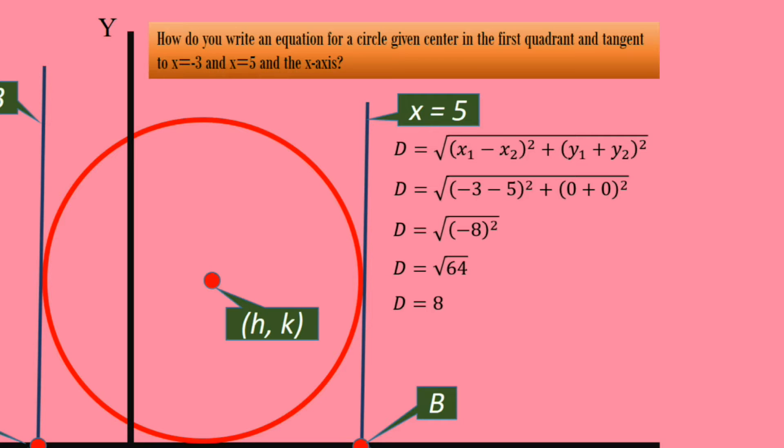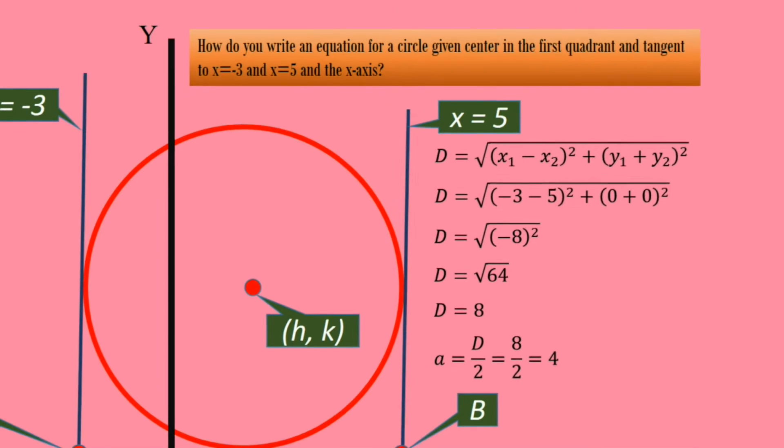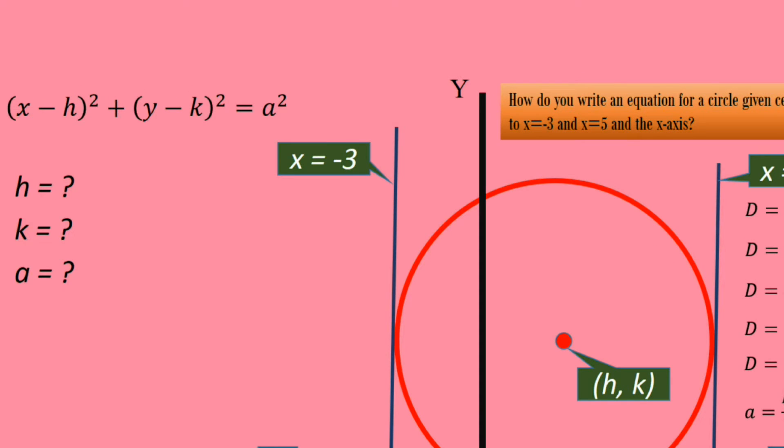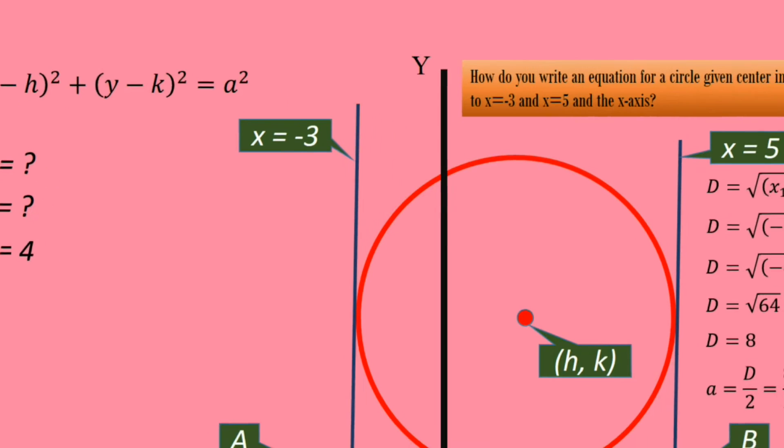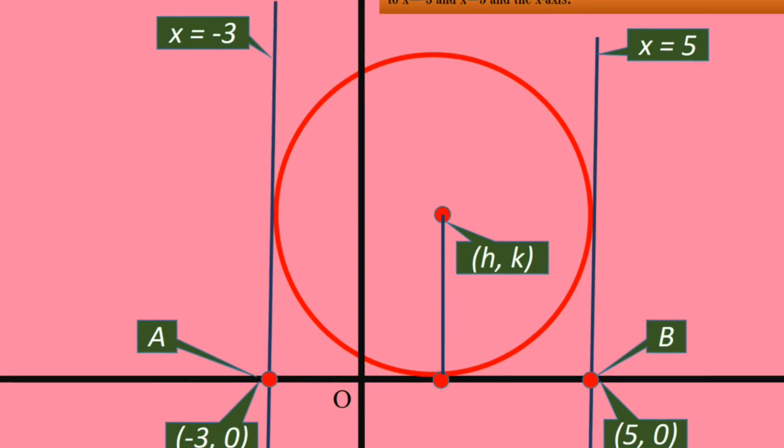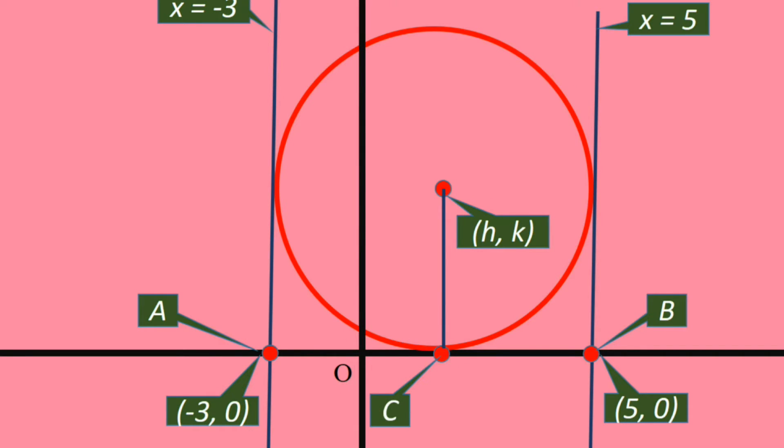Then, the radius of the circle is half of the diameter. It is 4. The value of a is 4. Next, we have to find the value of h and k. Half the distance between A and B is the radius. Let us fix half the distance as C. Finding the coordinates of point C is a step forward to finding the coordinate of center of the circle.